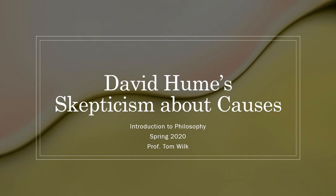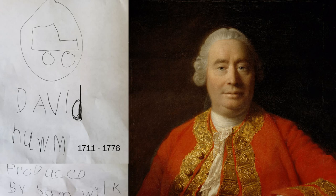Hi folks, welcome back. This week we're going to be talking about the skeptical philosophy of a Scottish philosopher named David Hume. Hume was a philosopher of the Scottish Enlightenment who lived from 1711 to 1776.